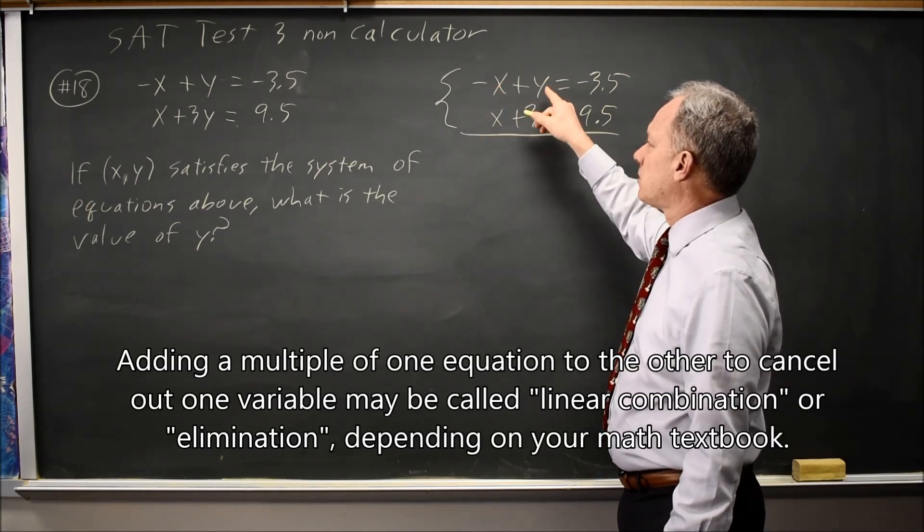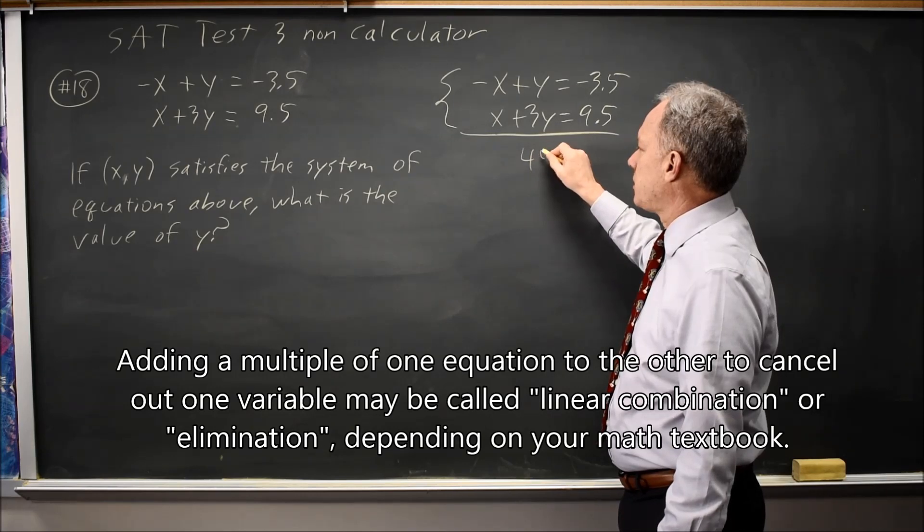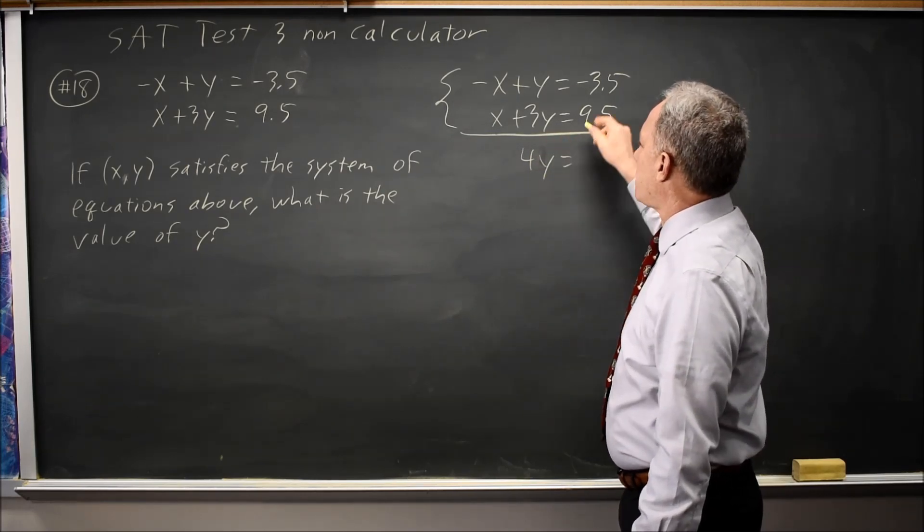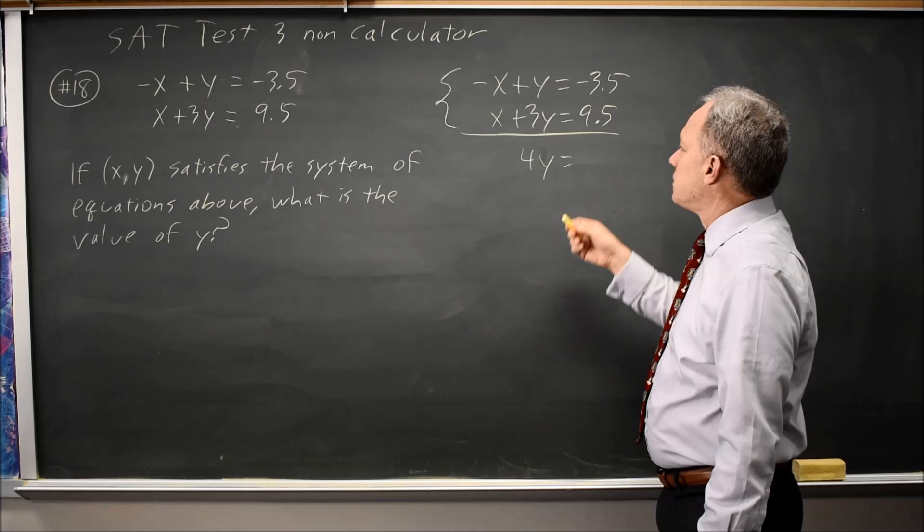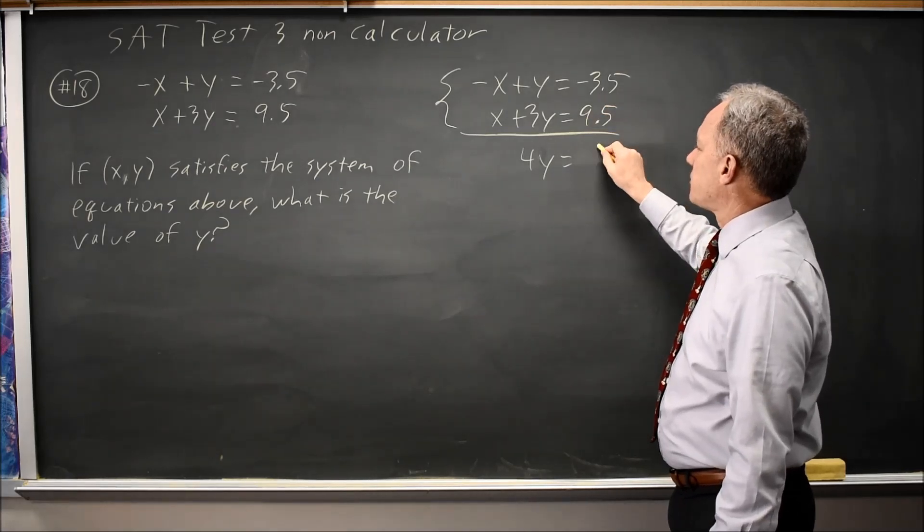negative x plus x is 0x, y plus 3y is 4y, and negative 3.5 plus 9.5 is 9.5 minus 3.5 is 6.